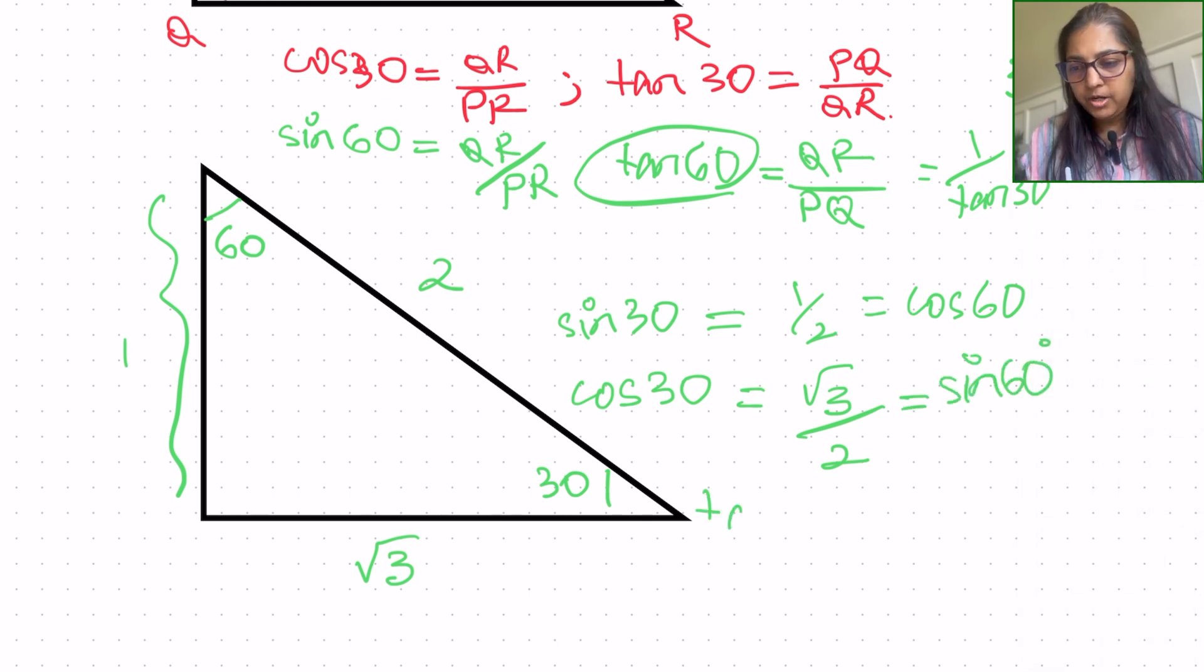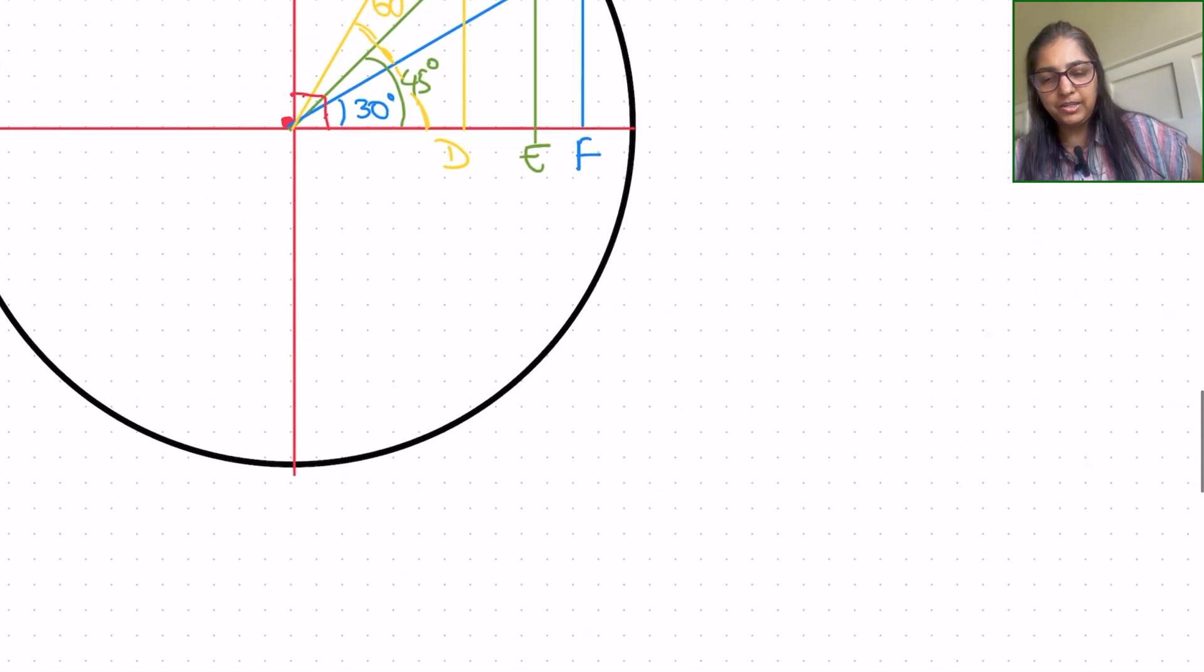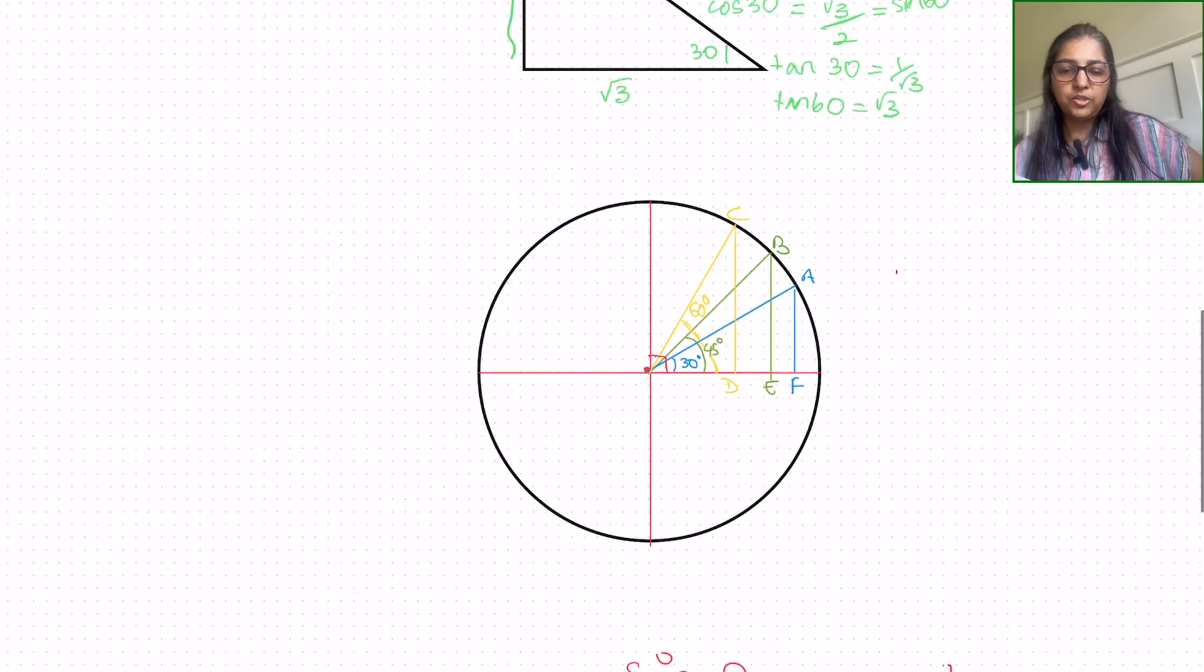And if we wanted to know tangent of 30, it is going to be 1 over square root of 3. And tangent of 60 actually is going to be square root of 3. So there are very interesting relations between these 30-60-90.